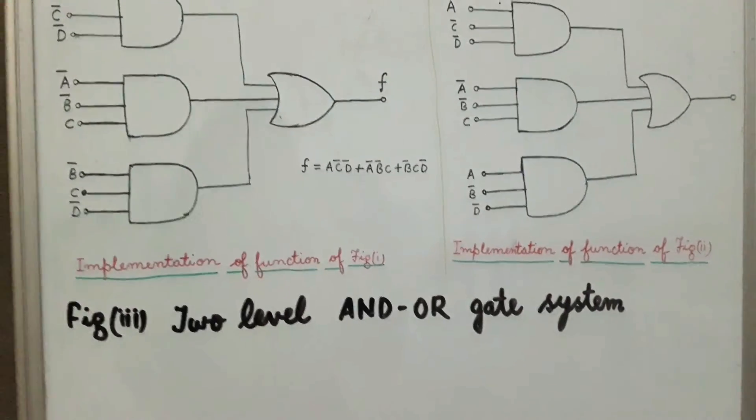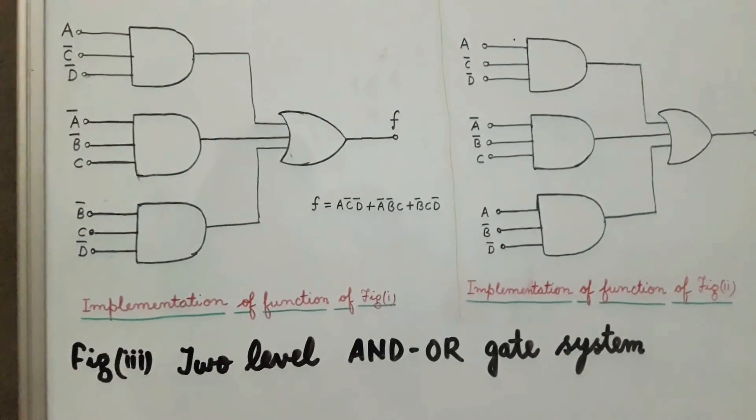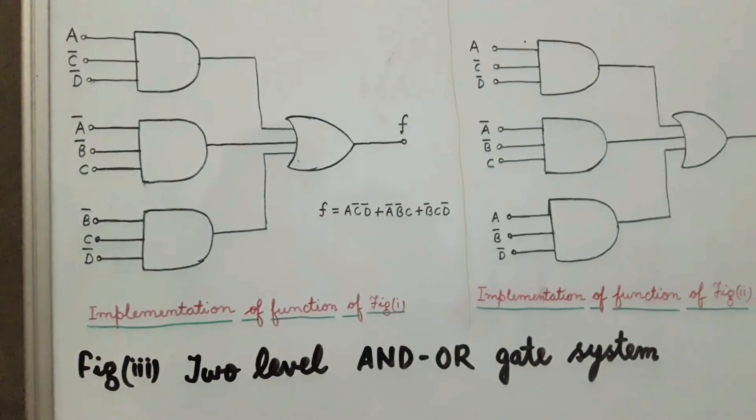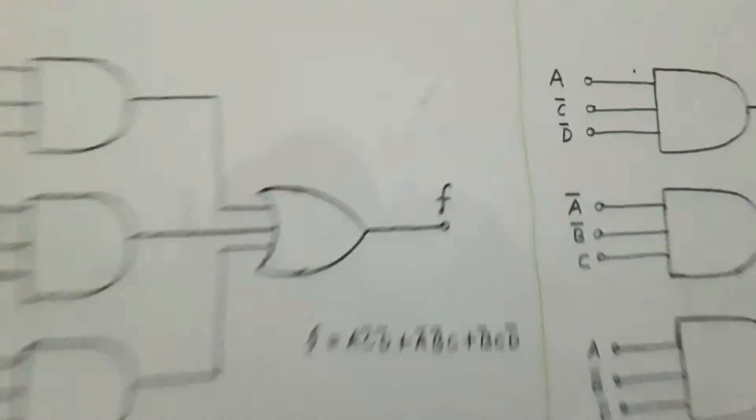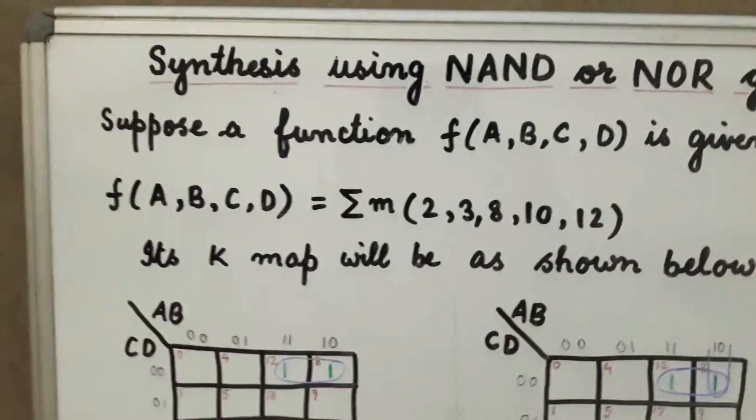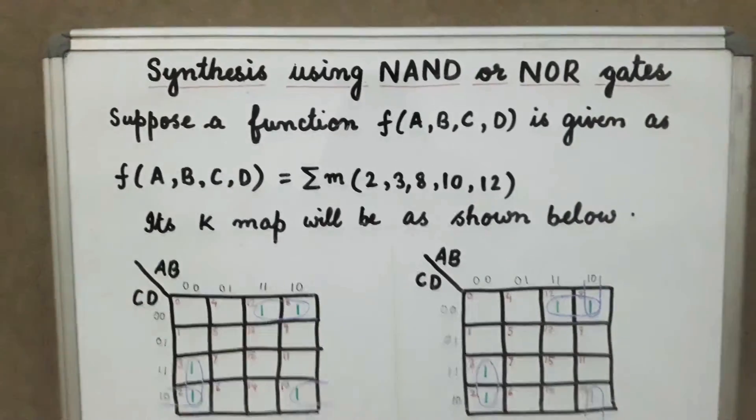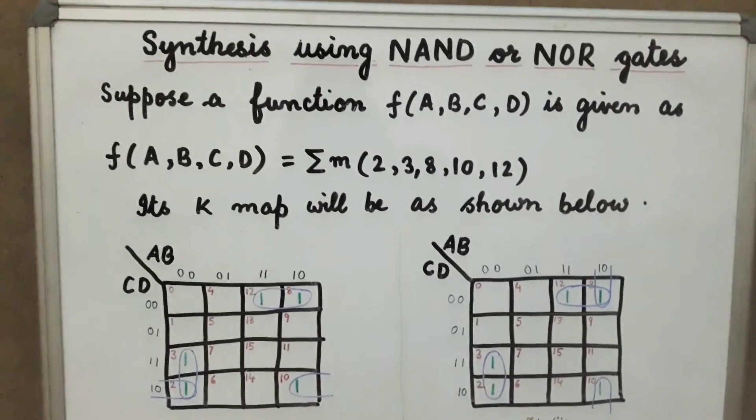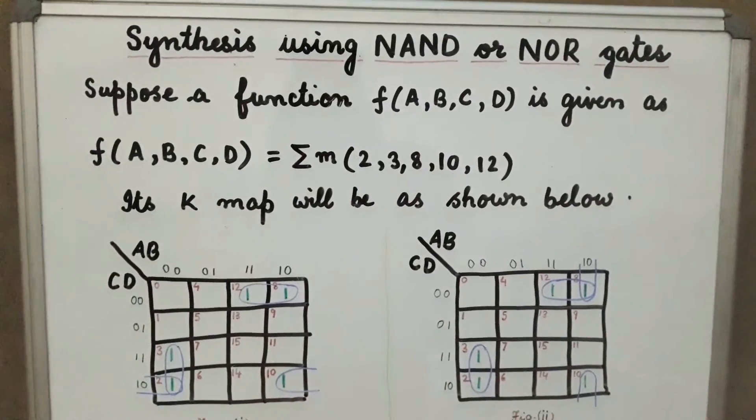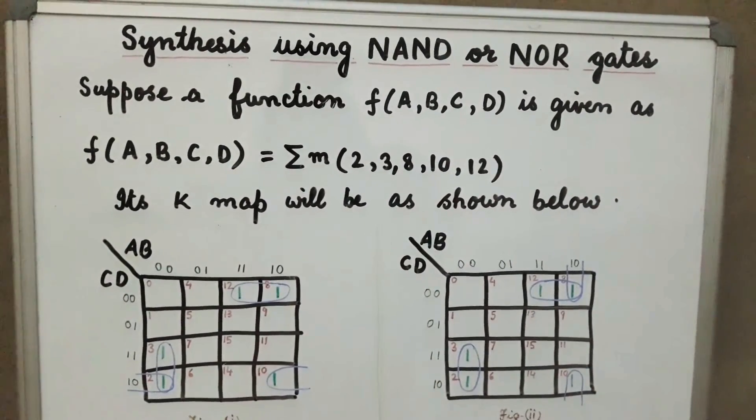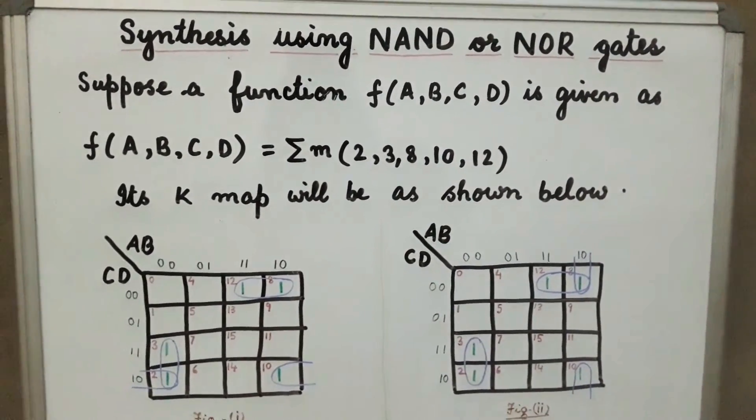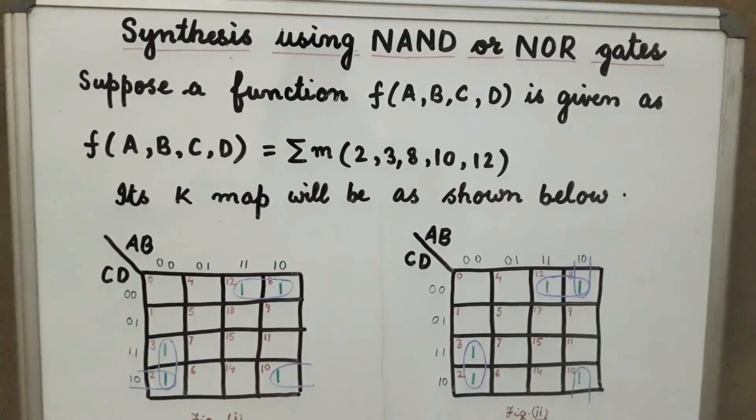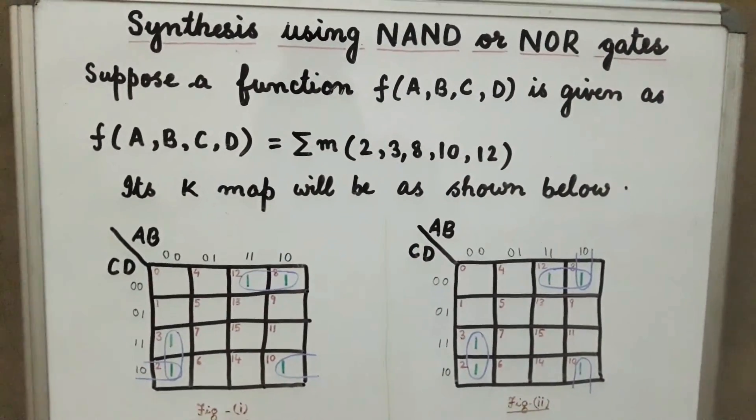So figure 3 shows the two-level AND gate system. We find that if we synthesize a logical function in the sum of products form, its physical realization consists of a number of AND gates followed by a single OR gate as shown in figure 3.